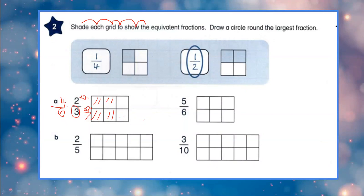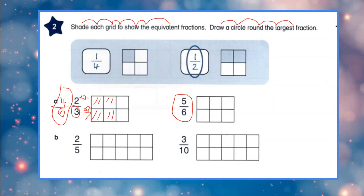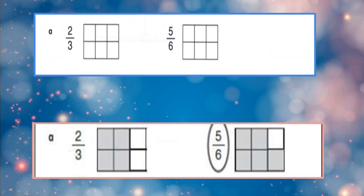Shade each grid to show the equivalent fractions. Now for the second part — draw a circle around the largest fraction. Is 5 upon 6 greater or 4 upon 6 greater? Both fractions have the same denominator of 6, so we compare the numerators. 5 is greater. So we circle 5 upon 6. We considered 2 upon 3 as 4 upon 6 in our mind, which allowed us to compare and shade correctly.